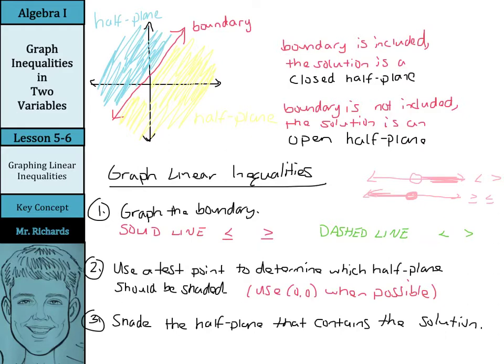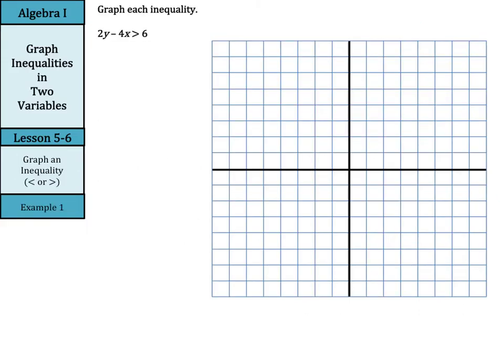We're going to use everything we know about graphing inequalities on a regular number line and how to graph linear equations, and combine them all for this lesson. Let's graph this inequality: 2y minus 4x is greater than 6. In order to do this, just like when we were graphing linear equations, let's go ahead and get this into y is greater than whatever form — let's solve for y in terms of x.